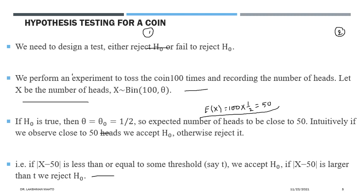If the absolute value of X minus 50 is less than or equal to some threshold value t, then we accept H0 — meaning X is within t distance of 50. Suppose 50 is here on the number line, then 50 plus t is on the right and 50 minus t is on the left. If the observed value of this random variable from the experiment is within t distance of 50, then we accept H0.